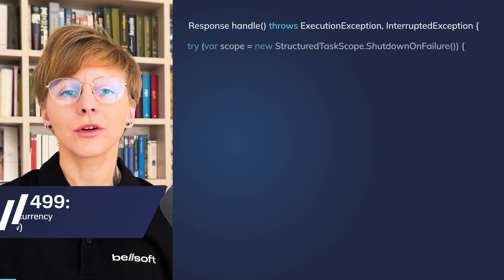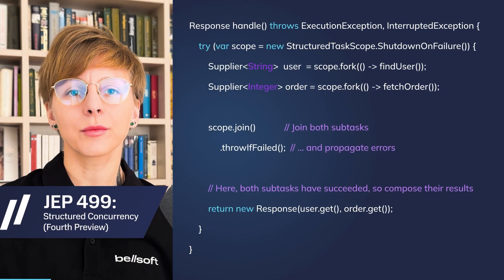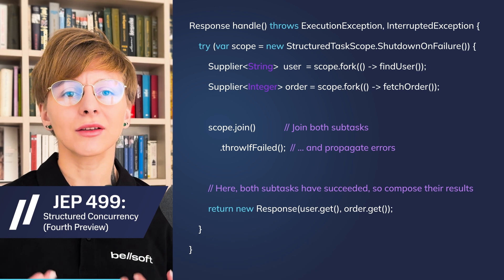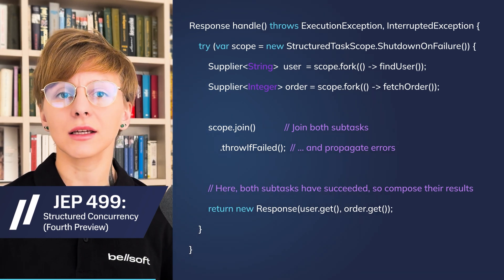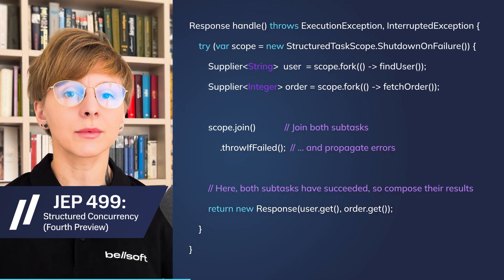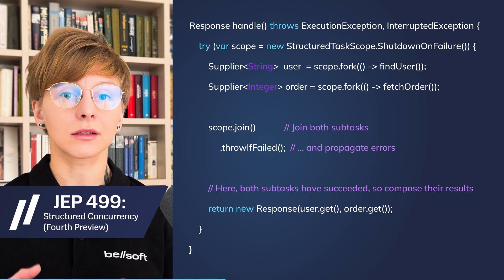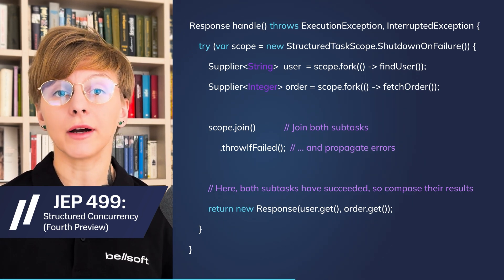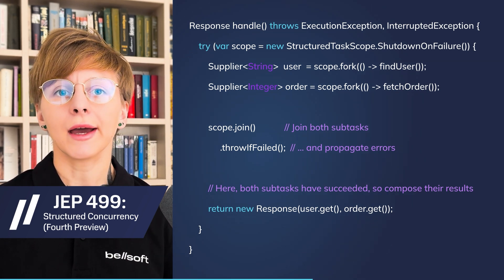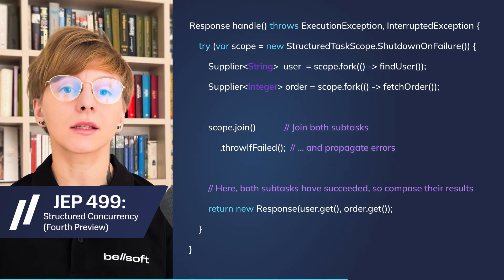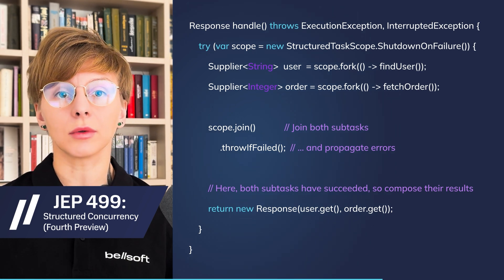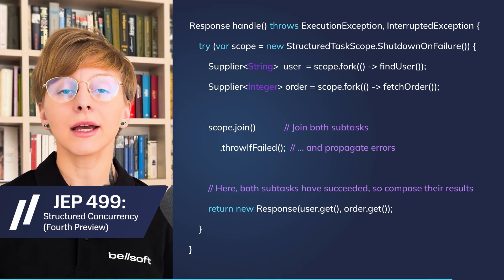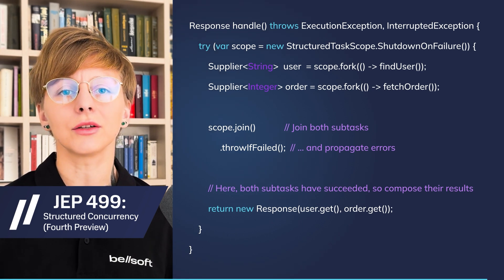JEP 499 introduces a fourth preview of structured concurrency. Structured concurrency is based on the principle that if a task is split into several subtasks, they all return to the task's code block. Entry and exit points of a task's block are defined clearly, and the lifetime of subtasks is confined to the parent code block. As a result, this feature improves the reliability and observability of concurrent code.